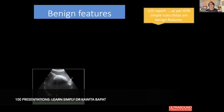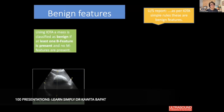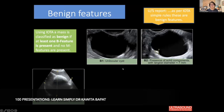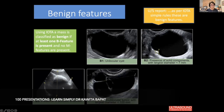For benign features in the sonographic workup, as per IOTA simple rules, a mass is classified as benign if at least one B feature is present and no M features are present. B1 is a unilocular cyst — a simple, unilocular cyst. B2 is the presence of a solid component with a largest diameter less than 7 mm. B3 is the presence of acoustic shadows — you cannot see transparent fluid — which is not worrisome.